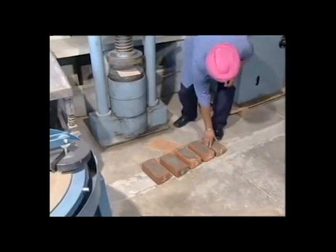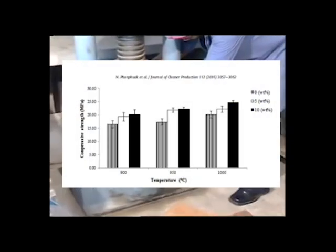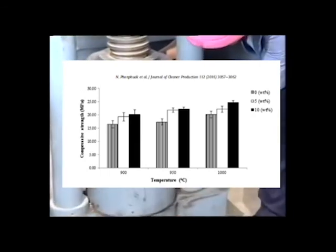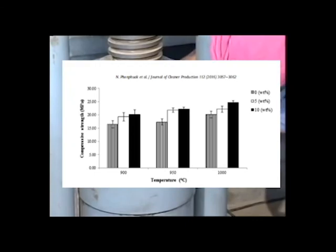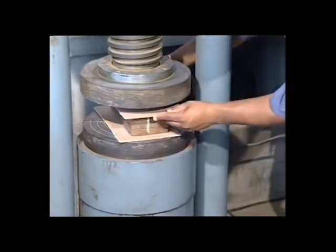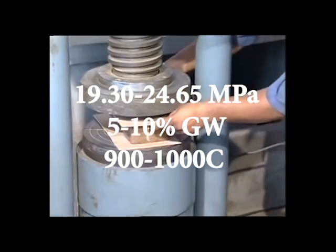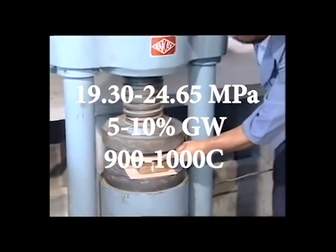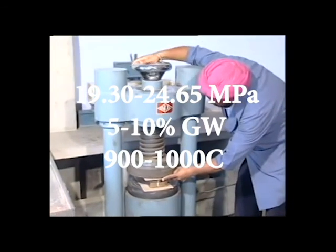Compressive strength. The table shown with data results from the compressive strength by the bricks presented that there is a relatively higher difference in clay bricks with waste glass compared to the one that contains none. The results revealed that the compressive strength were in the ranges of 19.30 to 24.65 MPa when waste glass addition increased from 5 to 10% and firing temperatures from 900 to 1000 degrees Celsius.